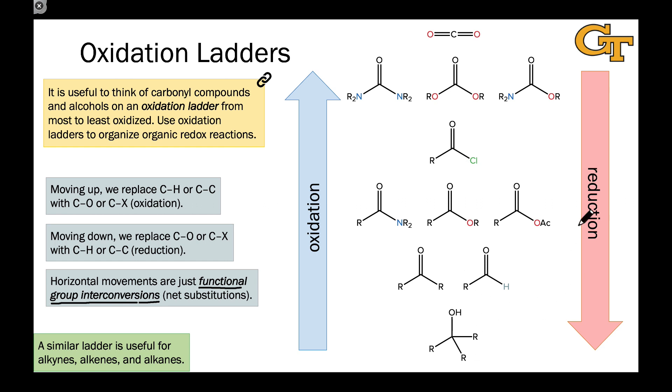At the bottom of the ladder, we have the most reduced compounds, and these are the alcohols. The oxidation state of this carbon, which is going to be our focus throughout the ladder, is plus one. If we move up to the ketones and aldehydes, we've increased that oxidation number by one unit. So moving up the ladder here corresponds to oxidation. Now we're at plus two for the aldehyde and plus two, formally, for the ketone.